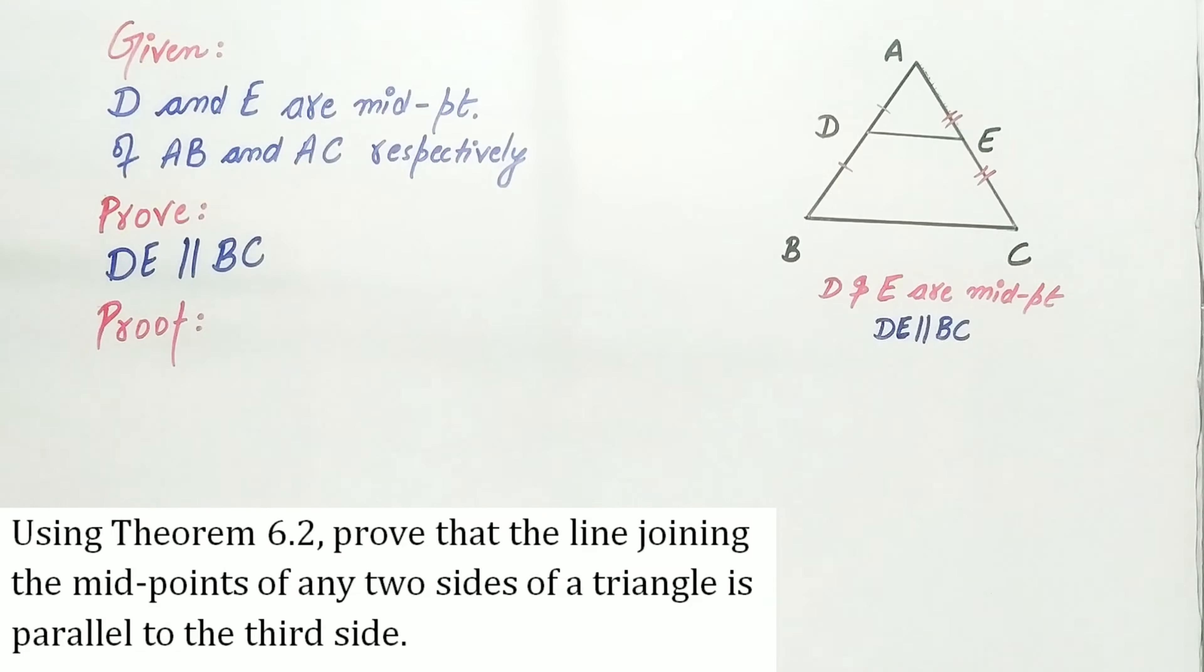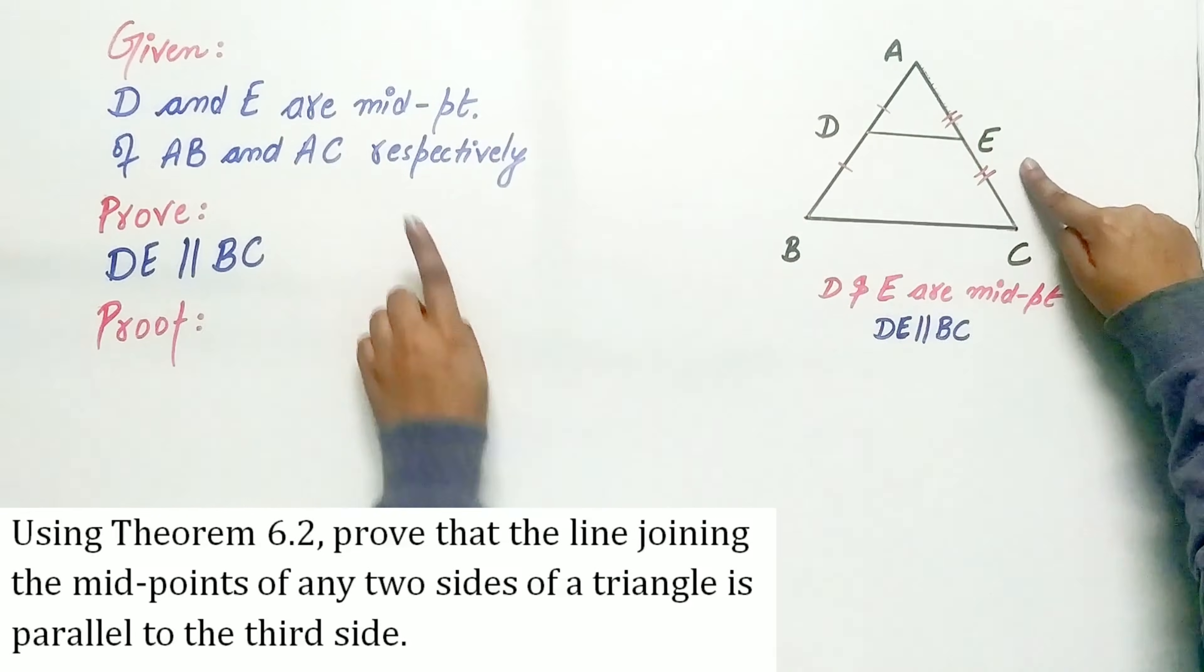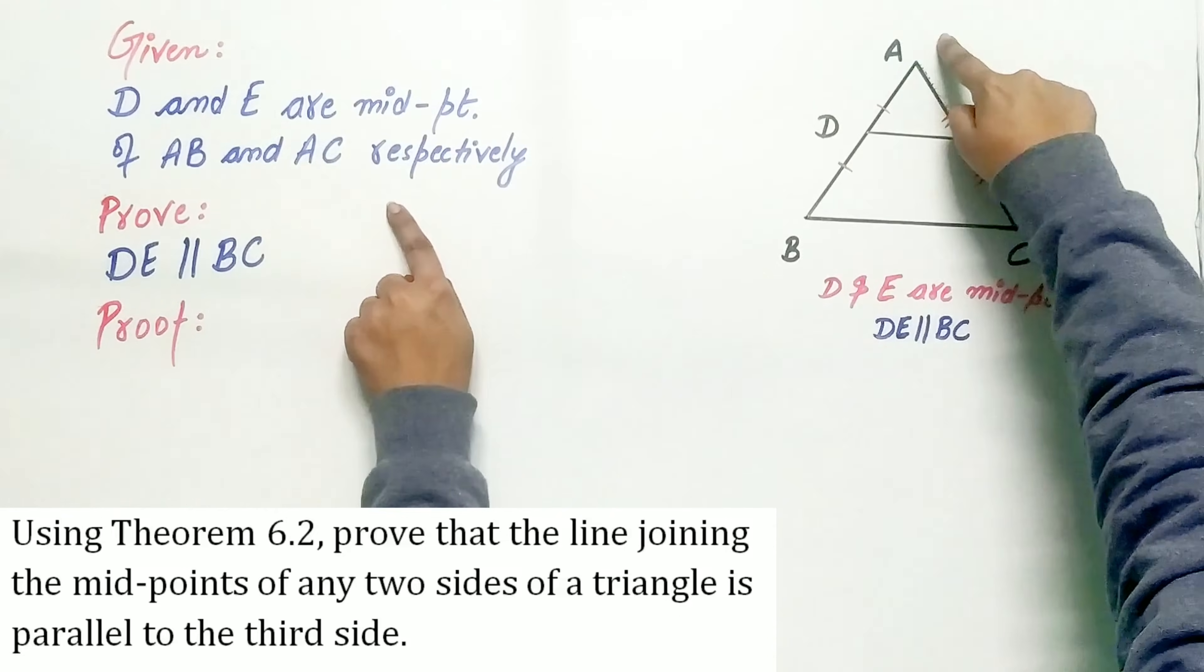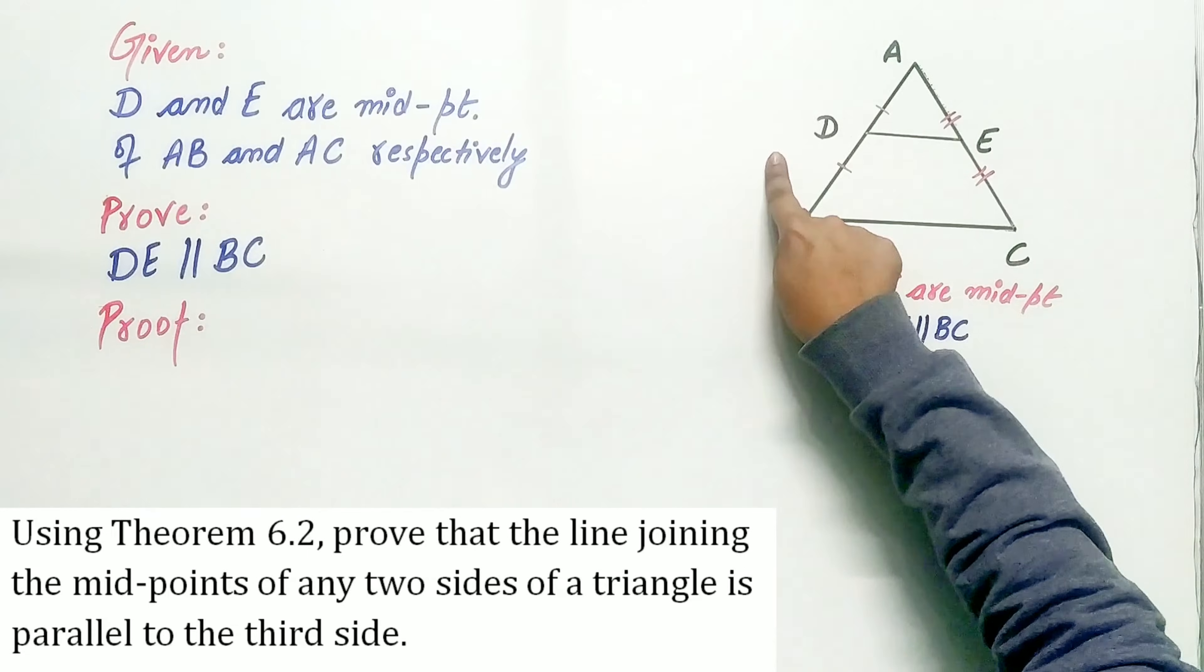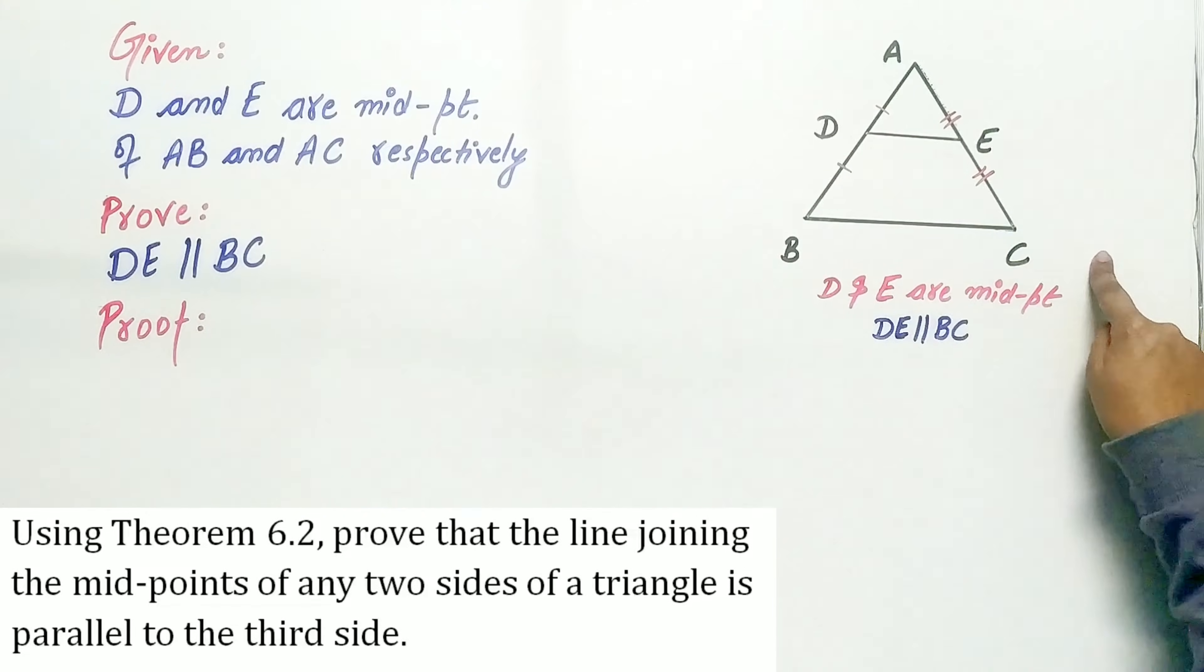That means it is given to us that D and E are the midpoints of AB and AC respectively. We have to prove that DE is parallel to BC.